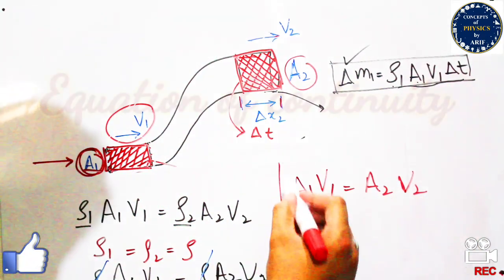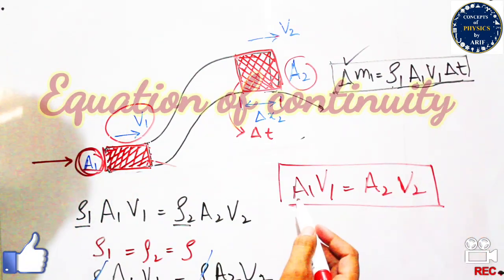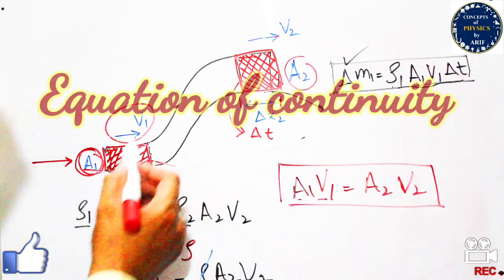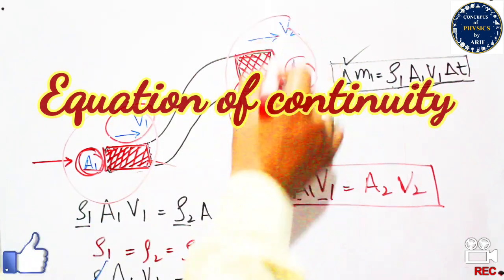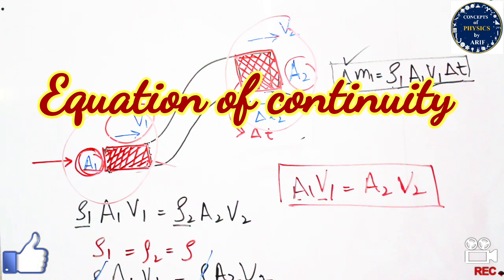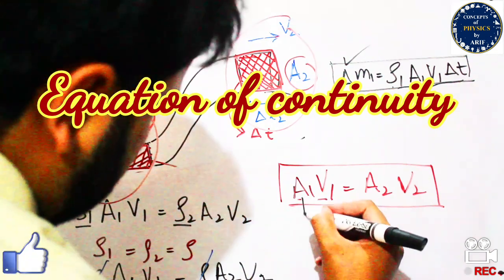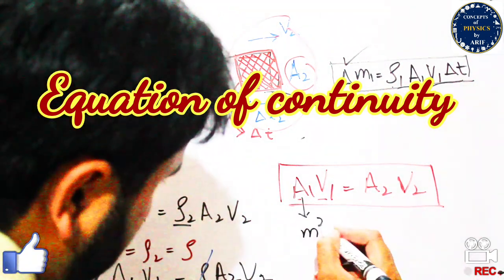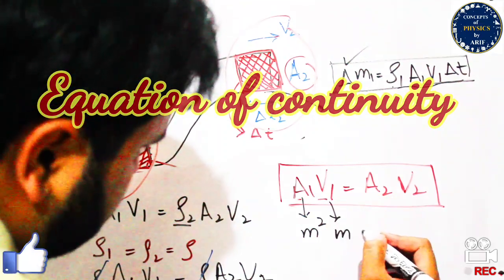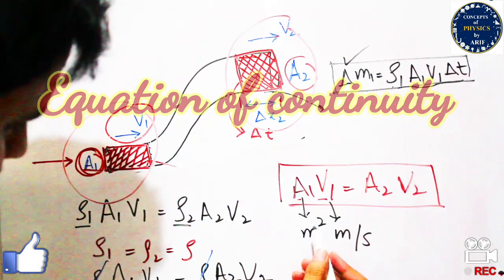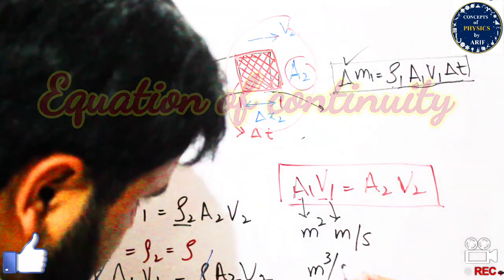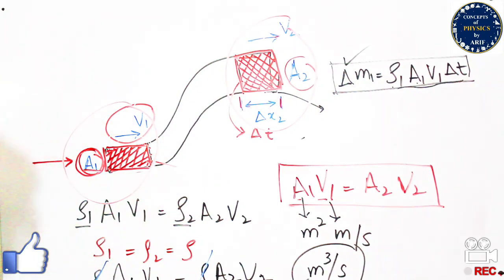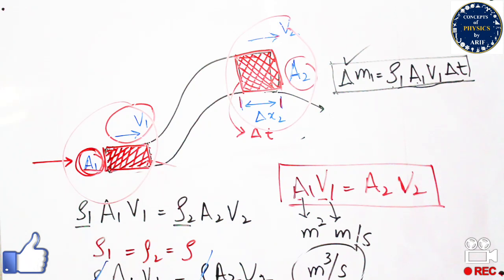This is known as the equation of continuity. It means that the area multiplied by velocity at part 1 equals area multiplied by velocity at part 2. We can verify this from its units: area has units of meter squared, velocity has units of meter per second, so the product gives meter cubed per second, which is the volume of fluid passing per unit time, also known as the rate of flow.